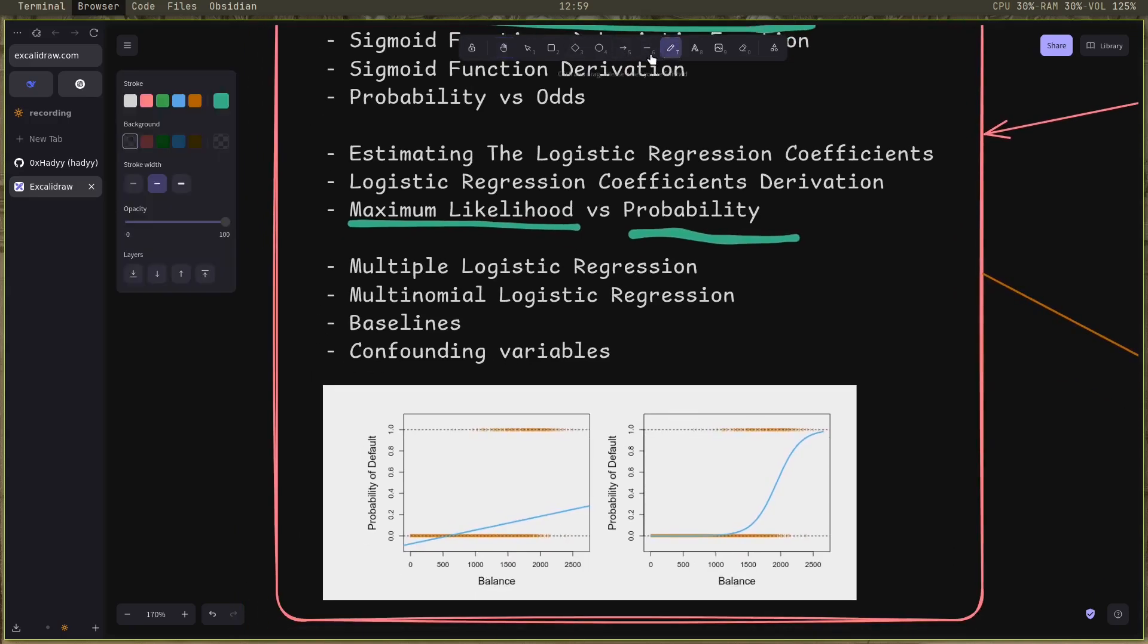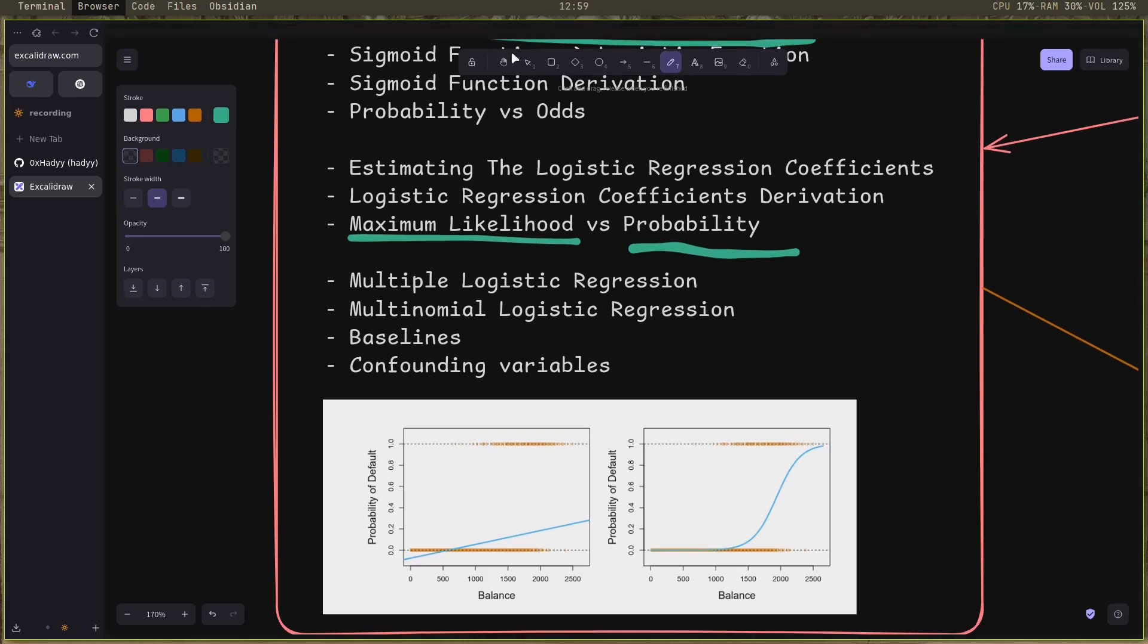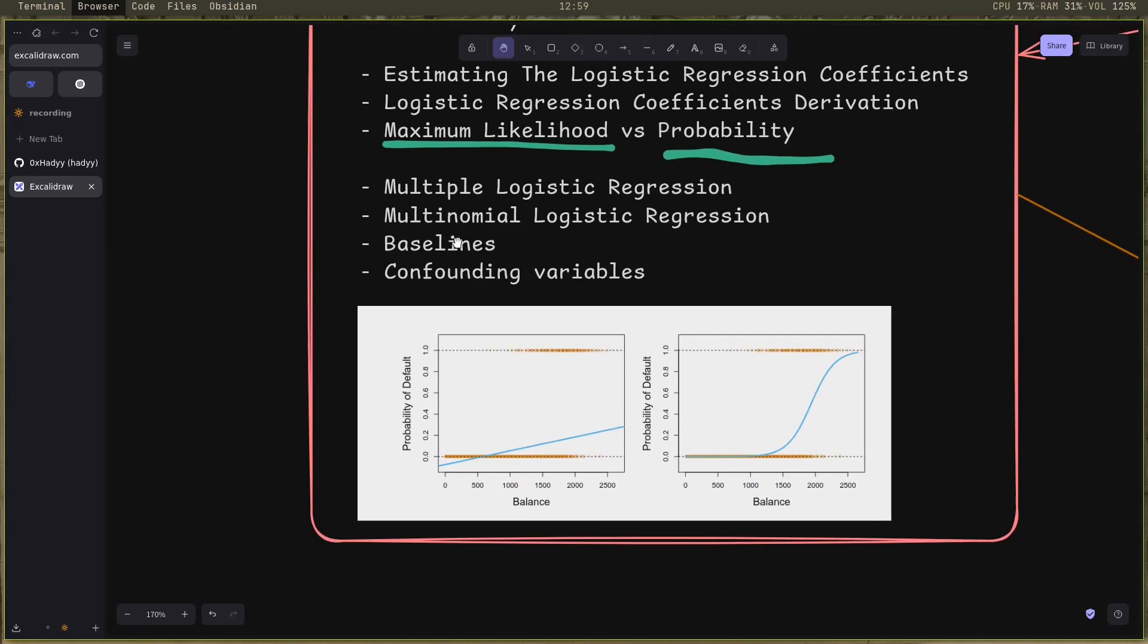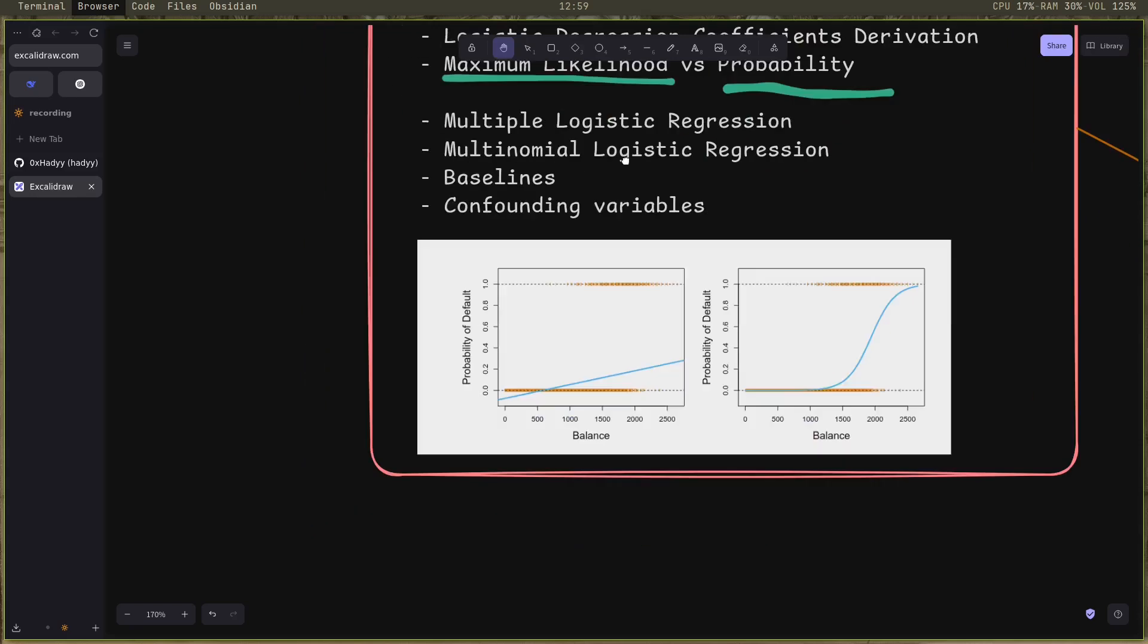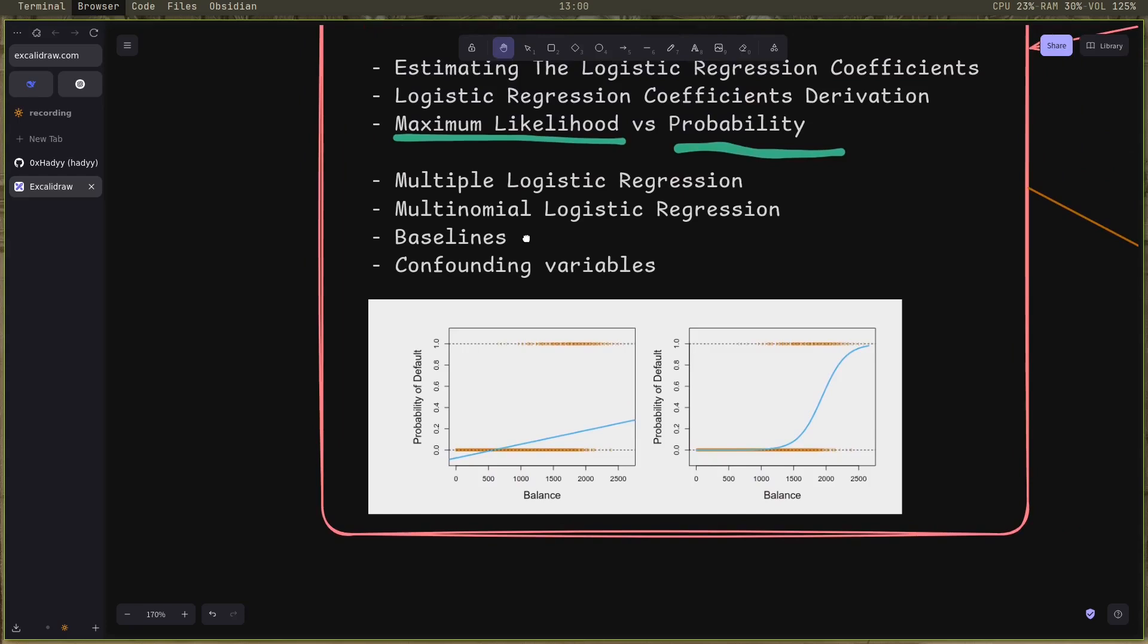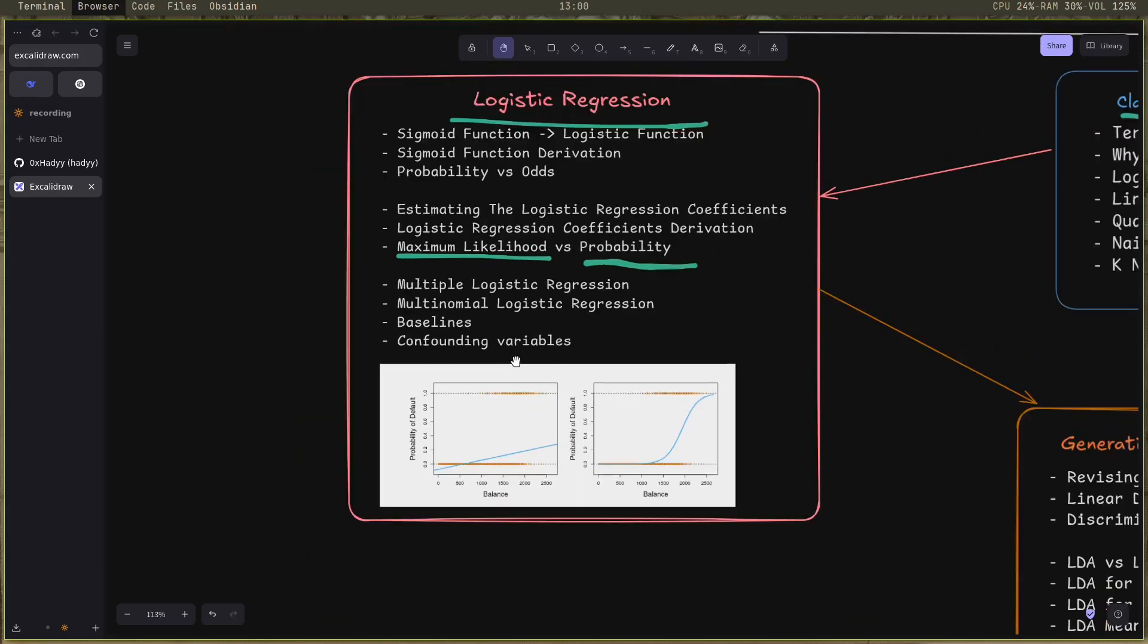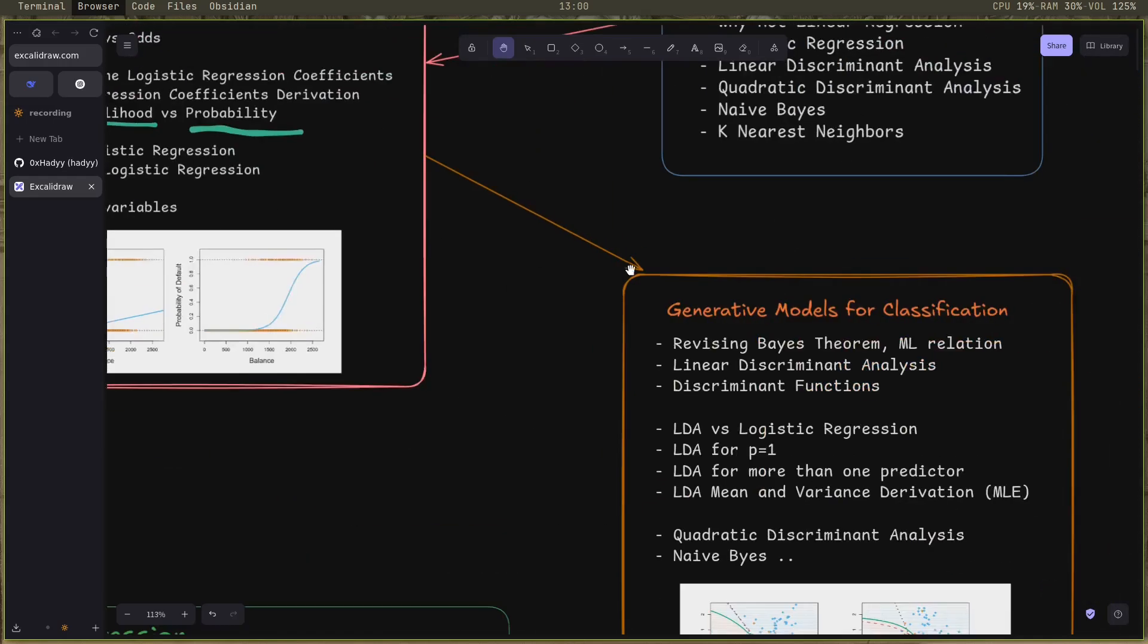After that, I studied the multiple logistic regression which uses multiple predictors, and the multinomial logistic regression which predicts more than two classes. I studied the concept of baseline in multinomial regression and why it doesn't affect choosing any class as the baseline. And right after that, confounding versus collinearity, what confounding variable means, and how to deal with it.